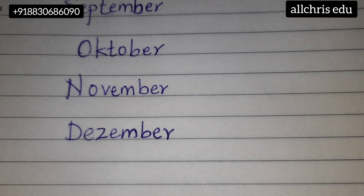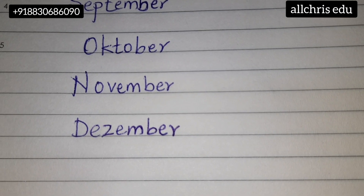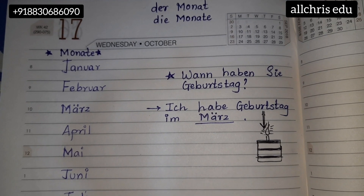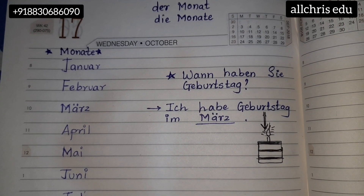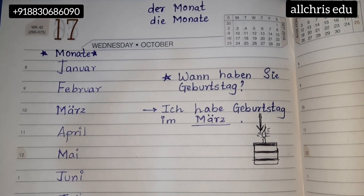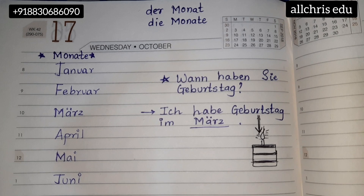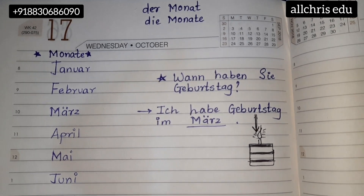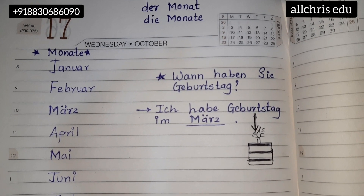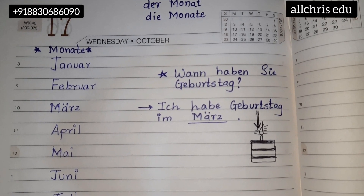Now, every time with some topic we are learning questions also. So for months, the question is in front of you. Number one: Wann — W-A-N-N — means 'when.' The sound you make should be 'va.' Wann haben — H-A-B-E-N. Please don't use English pronunciation. Always try to listen to the videos first and then try to practice your pronunciation. The Z sound we have already learnt. Wann haben Z...